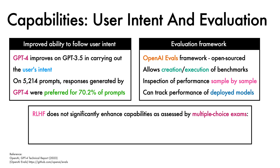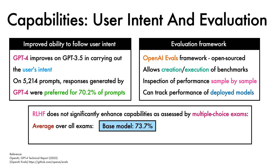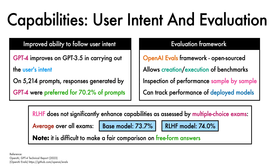One further interesting finding is that RLHF post-training does not significantly enhance the capabilities of the base model, as assessed by multiple-choice exams. In particular, when averaging over all exams, the base model scores 73.7% and the RLHF model scores 74%, just 0.3% more. Note that it is difficult to make a fully fair comparison on freeform answers, because the way that these answers are sampled naturally benefits a model that can do instruction following effectively.